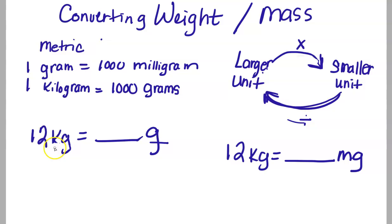Here we have an example of going from a larger unit to a smaller unit, kilograms to grams. So I know I'm going to be using multiplication. I'm going to use my 12, multiply by how many grams are in a kilogram.